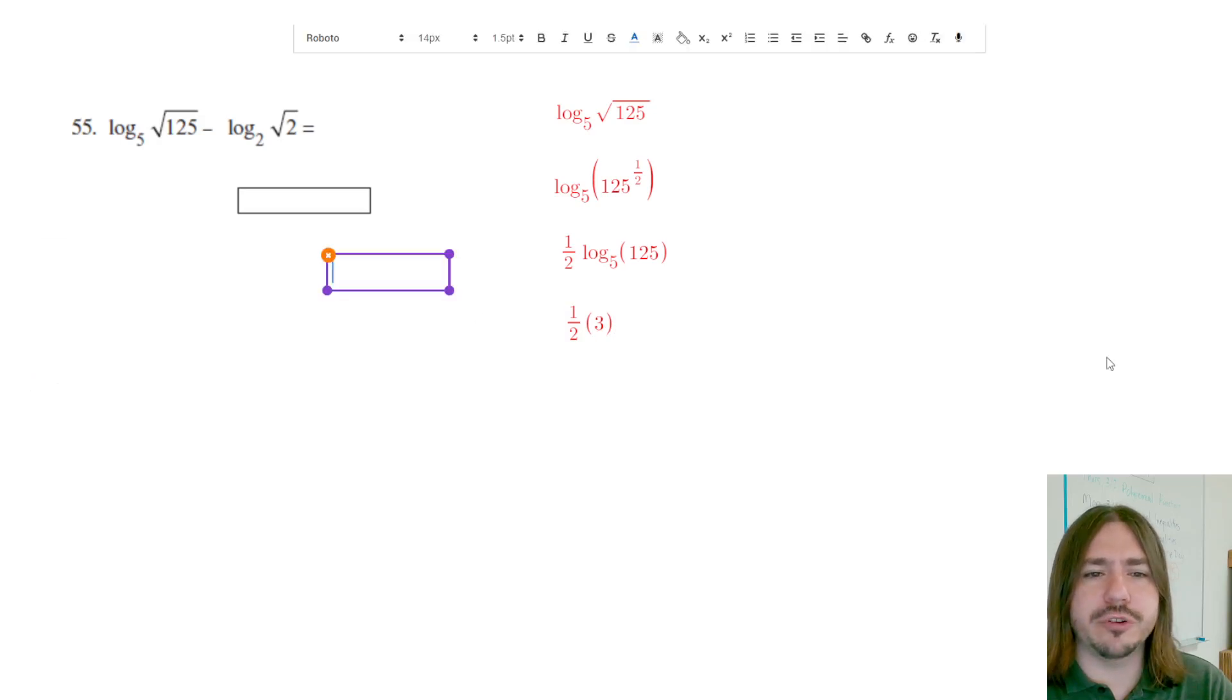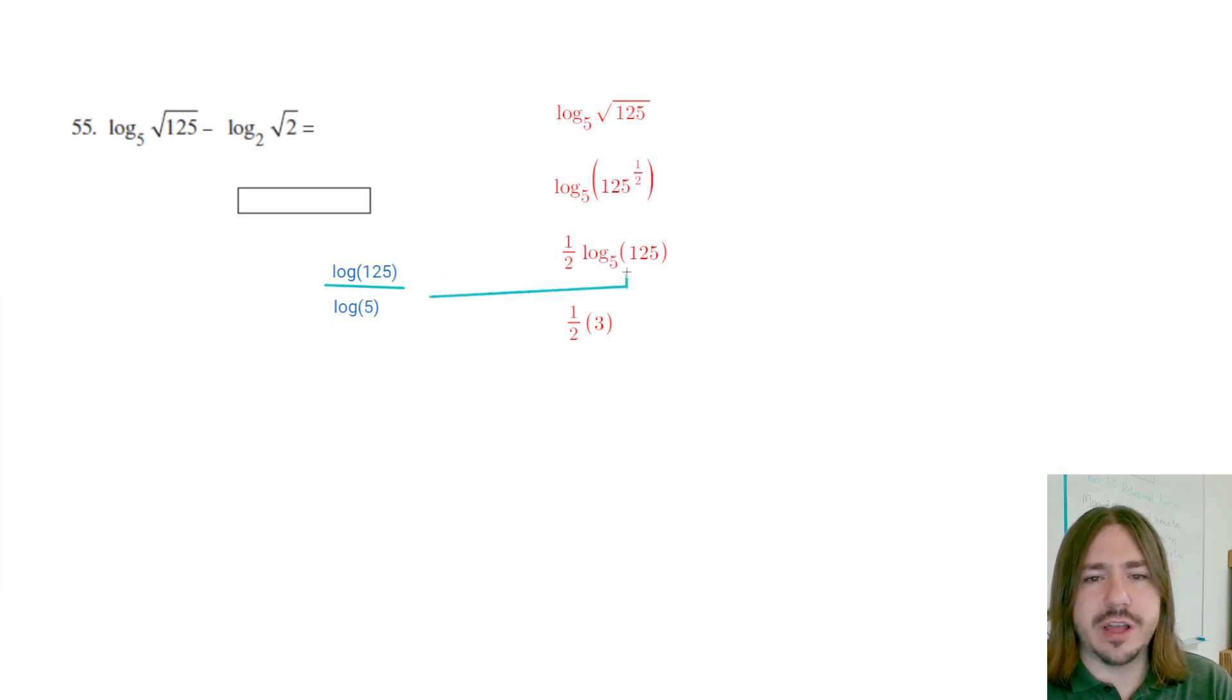Like I was saying before, you could use the calculator to just do log 125 over log 5. If you're not sure how to evaluate the logarithms, this is what you would type in into the calculator to evaluate this.